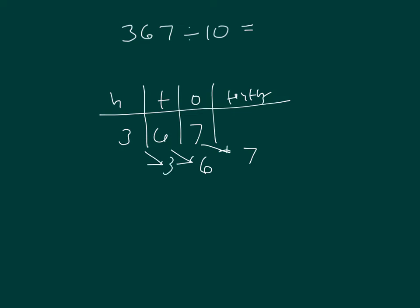And then so our number gets smaller, gets shifted over one place. So our number is 3 tens, 6 ones, 7 tenths, or the number 36.7. Also read as 36 and 7 tenths.